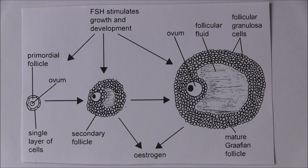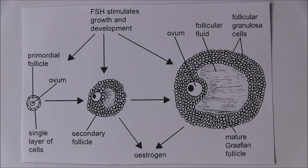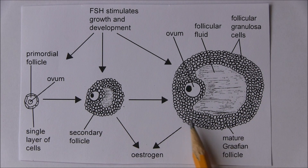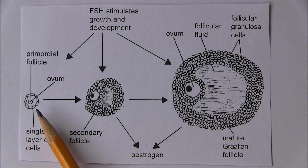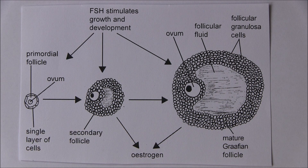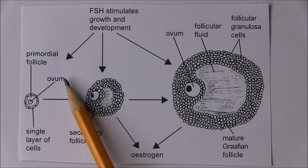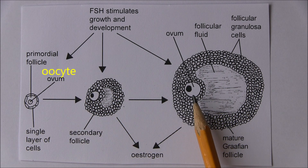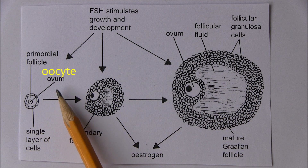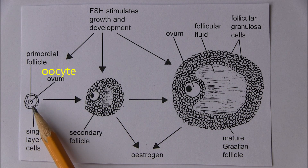In this diagram, we're looking at follicular development in more detail, from the primordial follicle through to the secondary follicle, all the way through to the mature Graafian follicle just prior to ovulation. Now, the diagram labels this as 'ovum,' but that should really be 'oocyte' to be more technically accurate. It becomes an ovum when it's mature; it's an oocyte when it's in an early stage of development.